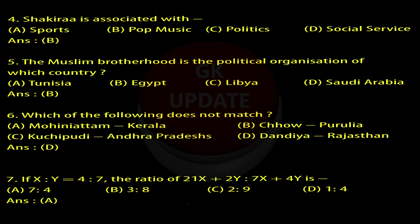Question 6: Which of the following does not match? A. Mohiniattam – Kerala, B. Chau – Purulia, C. Kuchipudi – Andhra Pradesh, D. Dandiya – Rajasthan. Answer: D.